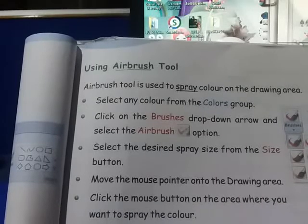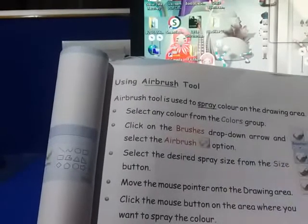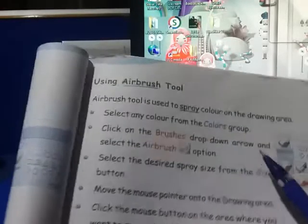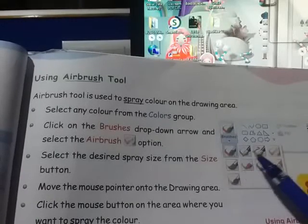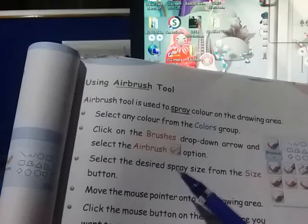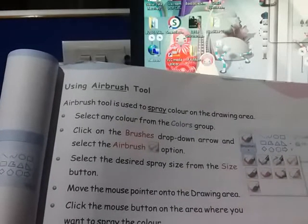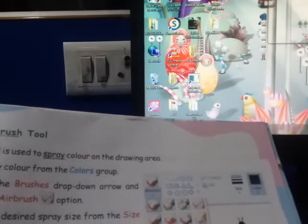To kaisi steps hoti hain? Select any color from the colors group, then click on the brush drop-down arrow and select the airbrush option. Hame kya karna hai? Color choose kiya, brush ke drop-down mein gaye. Ma'am ne kya bataya? Airbrush kaun sa hai? Fourth wala hai airbrush tool. Then select the desired spray size — desire matlab aap ki ichha ke hisab se, aap ko jaisa chahiye, jaisi aap ki pasand hai, us hisab se aap size choose karenge.